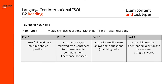Part 2 presents the candidates with a text with six sentences removed and aims to assess the candidate's ability to understand how meaning is built up in a text. A choice of seven sentences to choose from has been provided, so the extra sentence is a distractor.